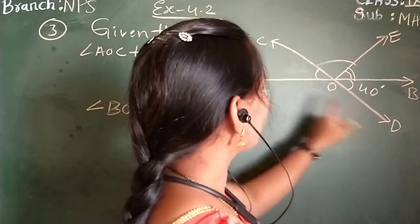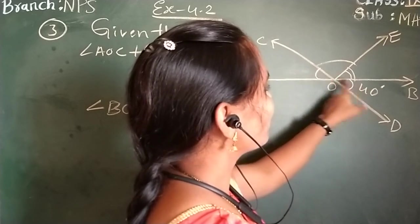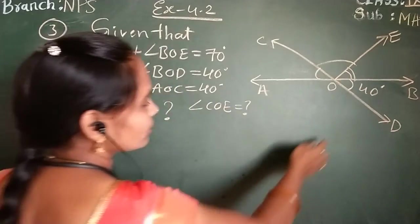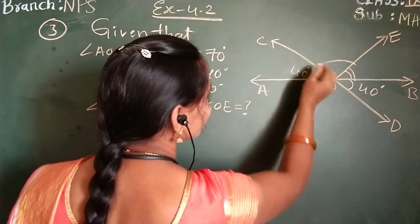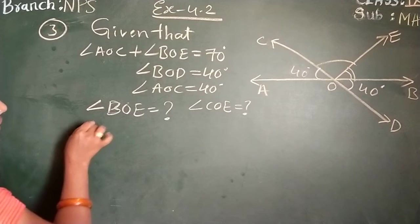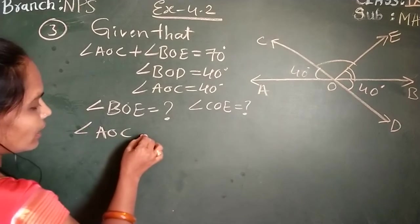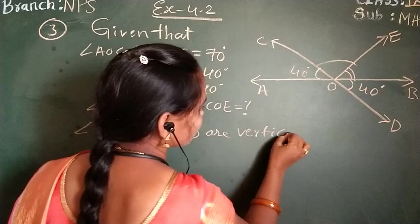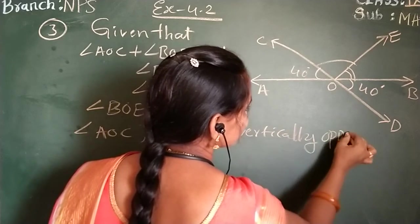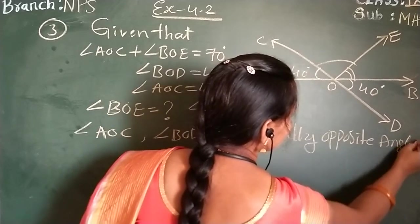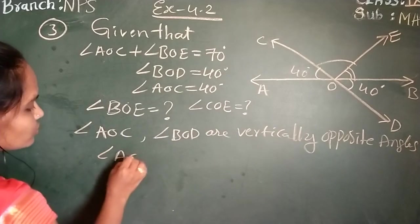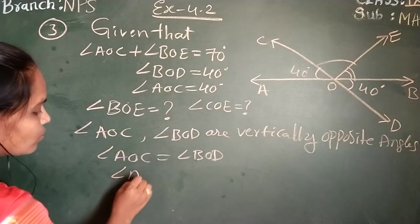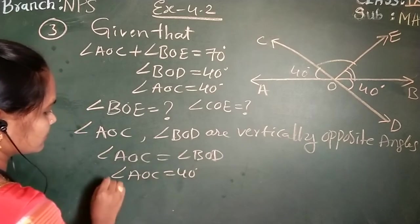See, angle BOD and angle AOC, both are vertically opposite angles. So, vertically opposite angles are always equal. Whatever value is there, the same value here we can take. Why? Because angle AOC and angle BOD are vertically opposite angles. So angle AOC equals angle BOD. Angle BOD already 40 given means angle AOC also 40.